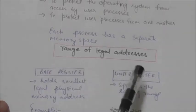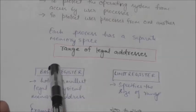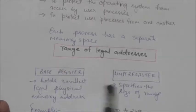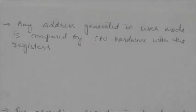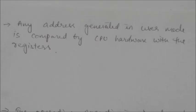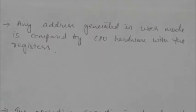The base register and limit register together specify the range of legal addresses for a process. When any address is generated in user mode, it is compared by the CPU hardware with the base register and limit register to determine whether it is in the range of legal addresses or not.